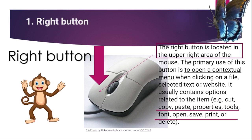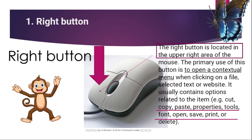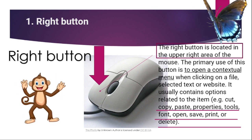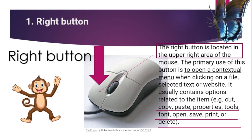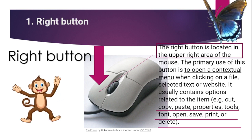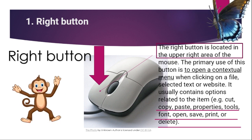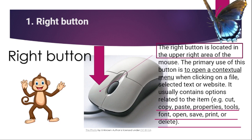Kung gusto nyo i-copy paste yung isang bagay o isang word, kailangan nyo i-highlight siya lang, tapos pwede nyo i-right click sabay copy. Ginagamit nyo rin yung pag-delete, paste, properties, tools, font, pag-open, at gusto nyo mag-save din ng file pwede nyo rin i-right click. Sa Word, magagamit nyo kalimitan yung right click or right button ng mouse.